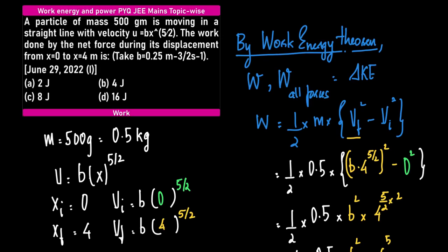A very typical application of the work energy theorem. A particle of mass 500 grams is moving in a straight line with velocity u equals bx to the power 5/2. The work done by the net force during displacement from x=0 to x=4 meters.